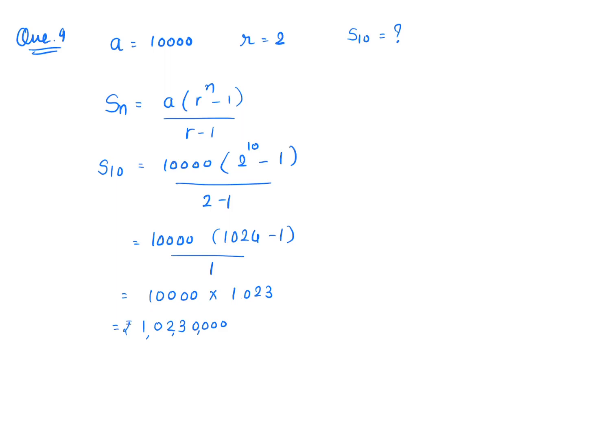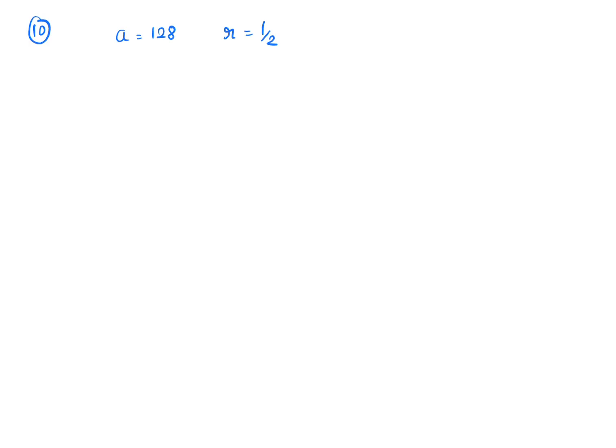Question number 10: A banker counts 128 notes in the first minute, so a = 128. Thereafter he counts half the number he counted in the previous minute, so r = 1/2. How many notes would he count in 5 minutes? We want S5.